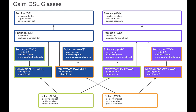We also have two app profiles — AHV and AWS at the bottom. In our example blueprint, we essentially just have a single service and a single app profile. I'll talk about the more complex nature of blueprints in a bit, but for now, focus on the left-hand side.